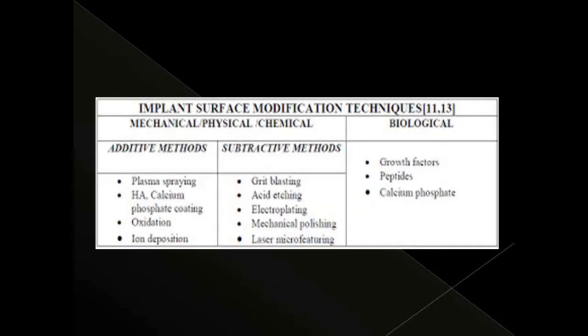To summarize, implant surface modification techniques are categorized into two major classes: biological and mechanical/physical/chemical. The mechanical/chemical class is subdivided into additive methods — including plasma spraying, hydroxyapatite, calcium phosphate and other coatings, oxidation, and ion deposition — and subtractive methods, including sandblasting, grid blasting, acid/alkaline etching, electroplating, mechanical polishing, and laser microfeauring. The biological method includes incorporation of polypeptide growth factors, differentiation factors, cytokines, calcium phosphate, etc.